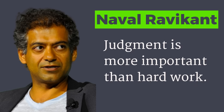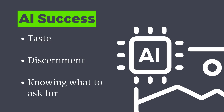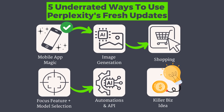One of my favorite thinkers is Naval Ravikant, and he talks a lot about how judgment is more important than hard work. I think now in this age of AI, this is more important than ever. Success in this new world of AI depends more on taste, discernment, and really knowing what to ask for. And speaking of knowing what to ask for, let's take a look at how Perplexity can help us with online shopping.